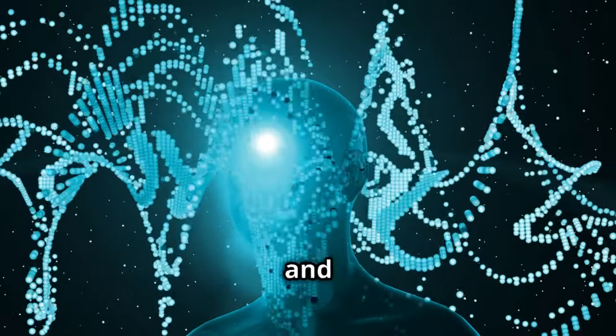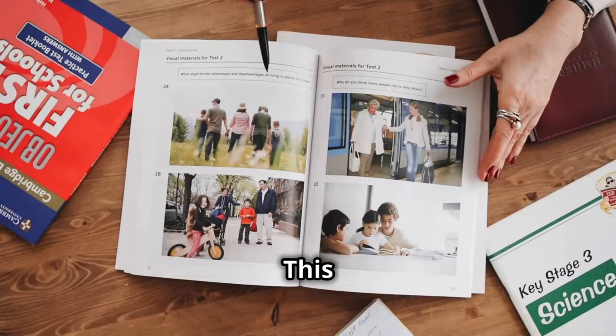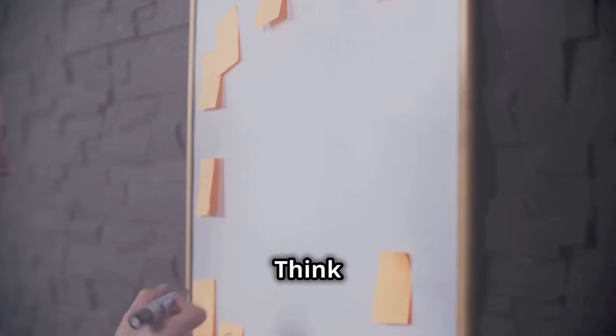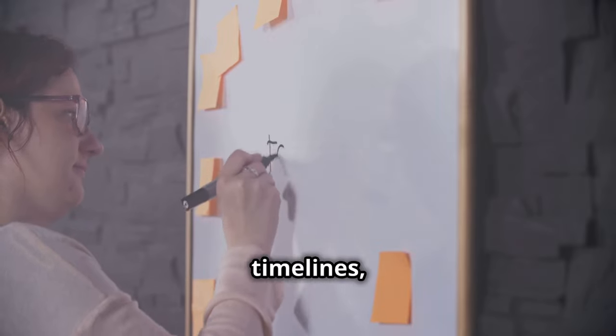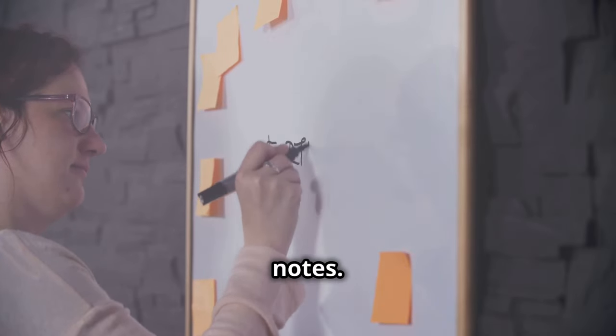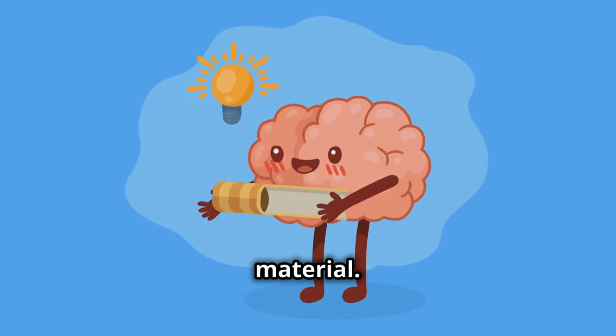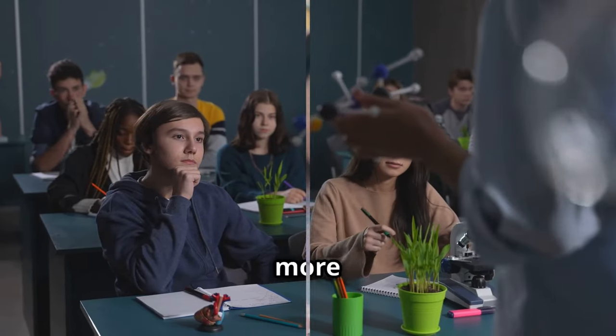Our brains love visuals, and that's where dual coding comes in. This technique involves combining verbal information with visual aids – think mind maps, diagrams, timelines, even just silly doodles in your notes. By engaging both sides of your brain, you create a richer and more memorable understanding of the material. Plus, it makes studying way more fun.